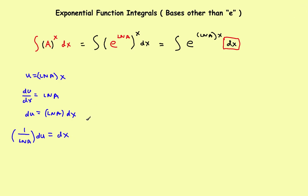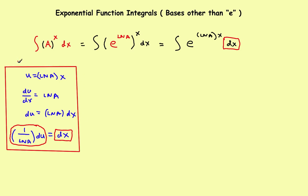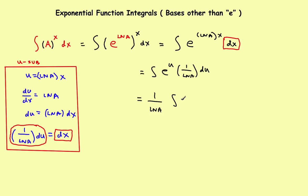That's the u-substitution. I needed a dx and I've got a dx. In place of the u-substitution, I'll replace it with this. So the problem changes into the integral of e to the u, and in place of dx, put what it's equal to: 1 over the natural log of a du. Since 1 over the natural log of a is a constant, we can bring it outside the integral, making this 1 over the natural log of a times the integral of e to the u du.